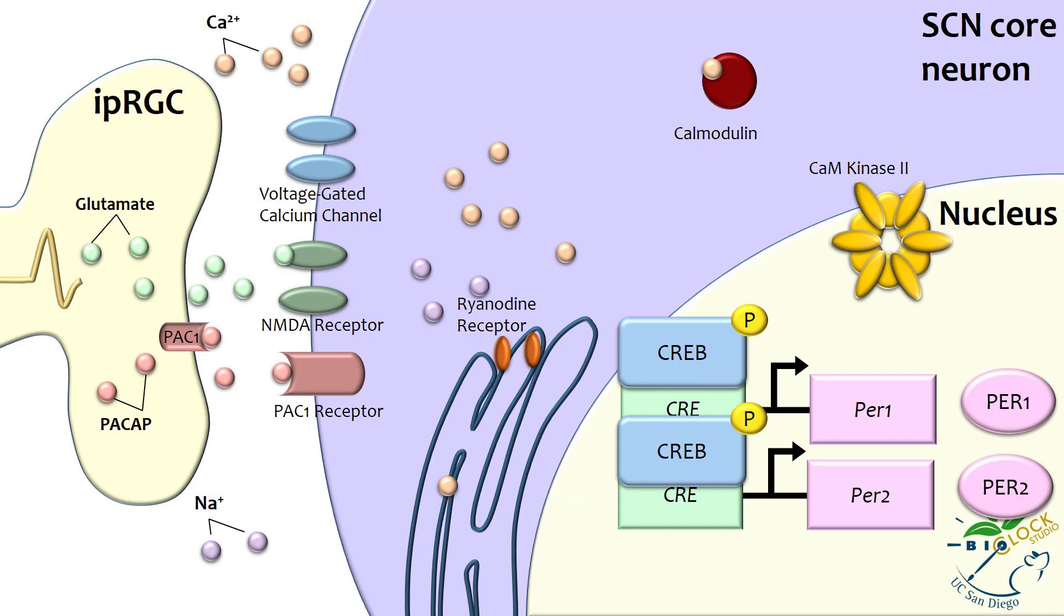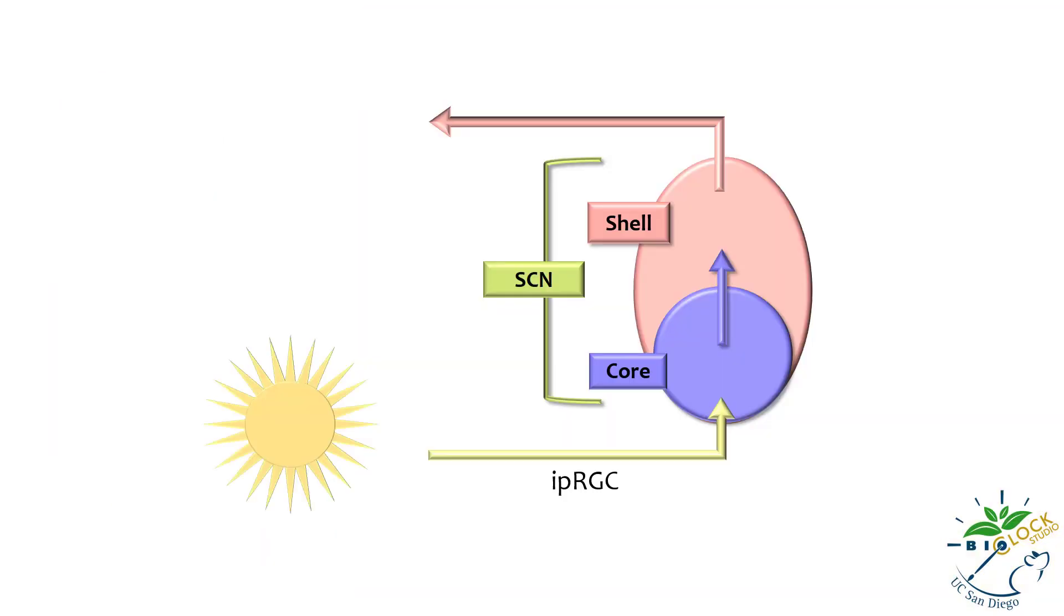This process allows the SCN core neurons to receive and process light information and initiate synchronization of the entire SCN to the external light-dark environment. After receiving light input, it is the job of SCN core neurons to communicate with other SCN neurons, called SCN shell neurons, which will then synchronize the clocks of the rest of the body.